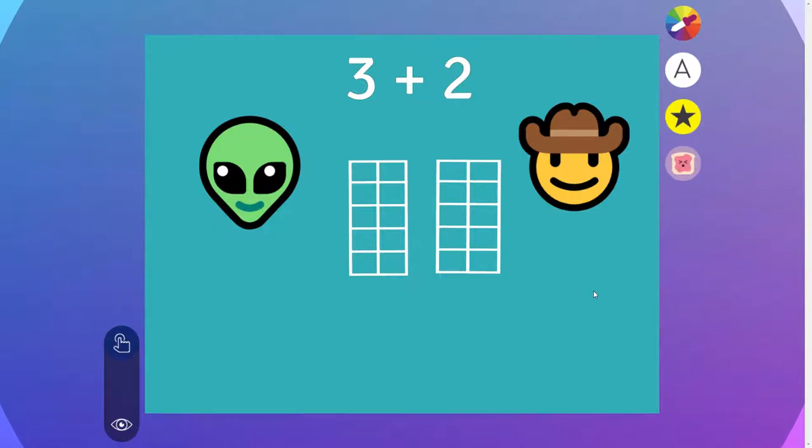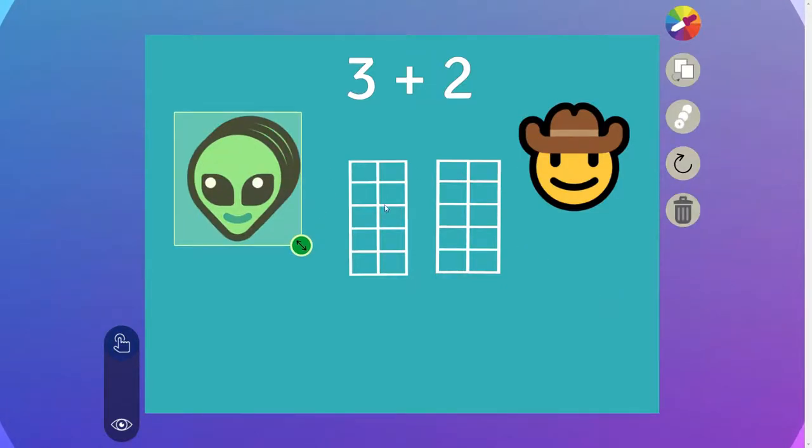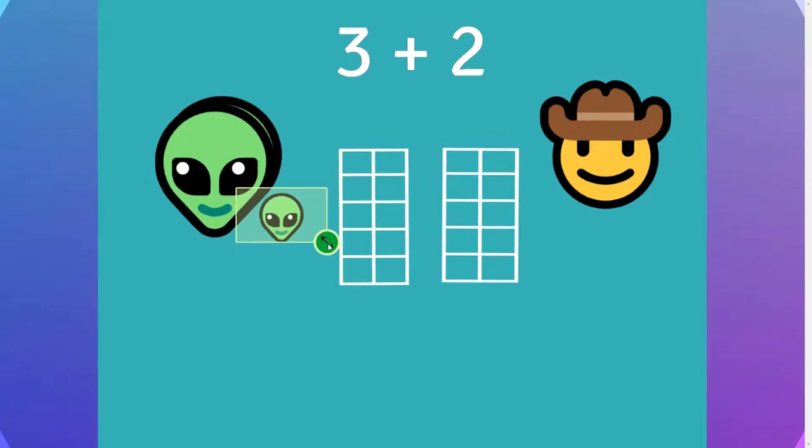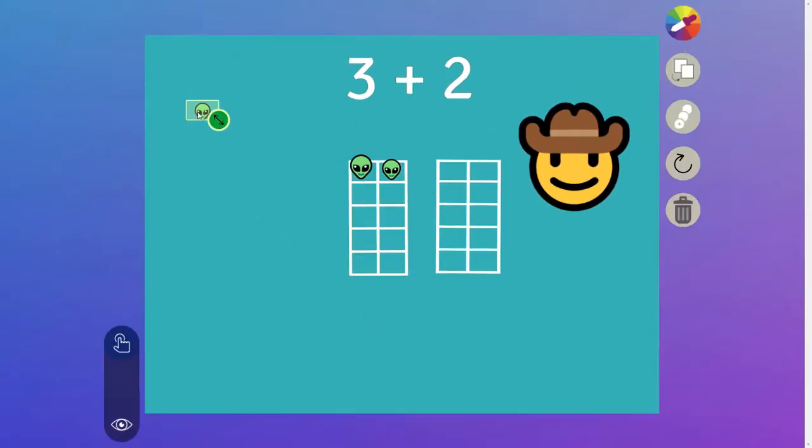My first number is three, so I'm going to use the copy tool to make more aliens so that I have three. Three aliens go into this apartment building. The next number is two, so two cowboys go into the other building.